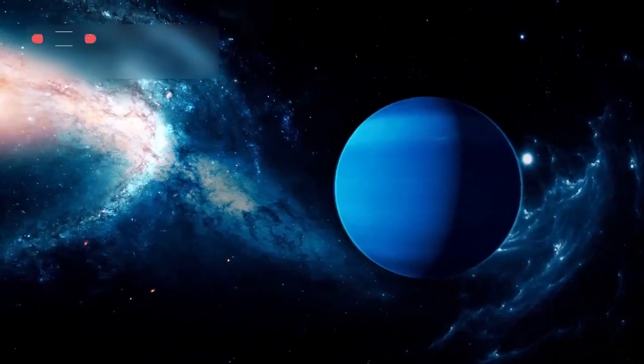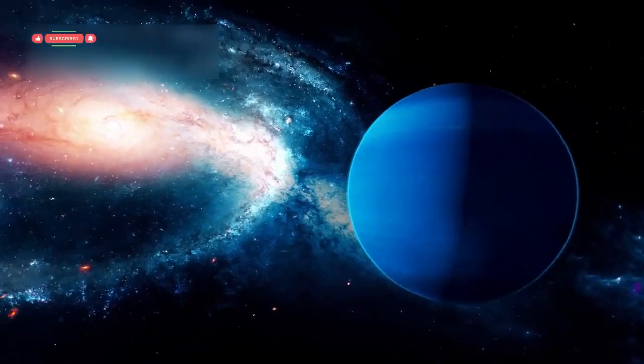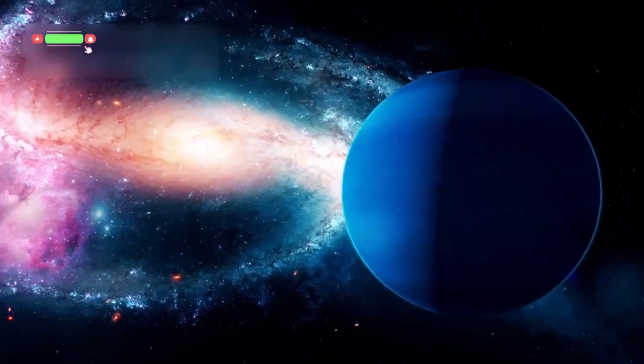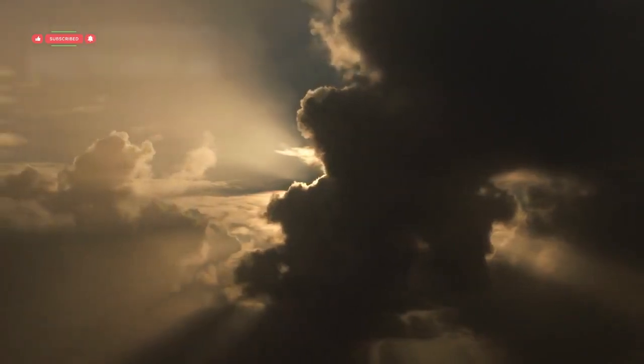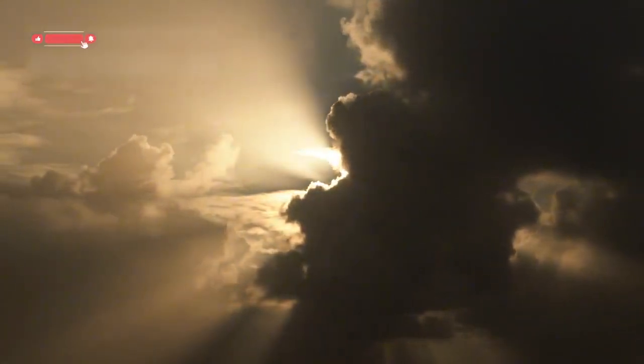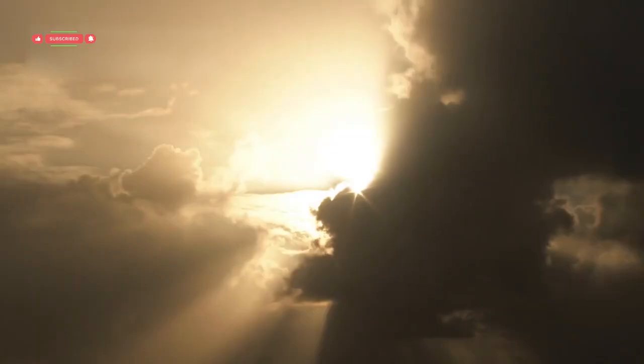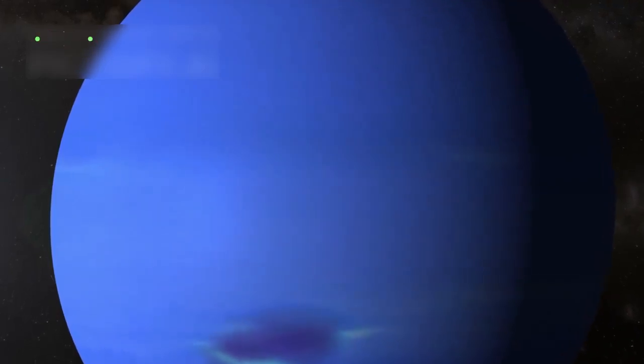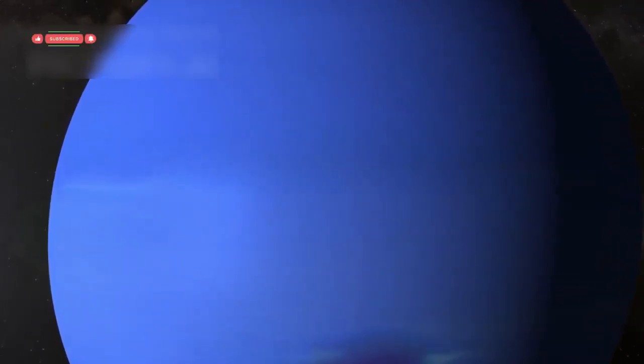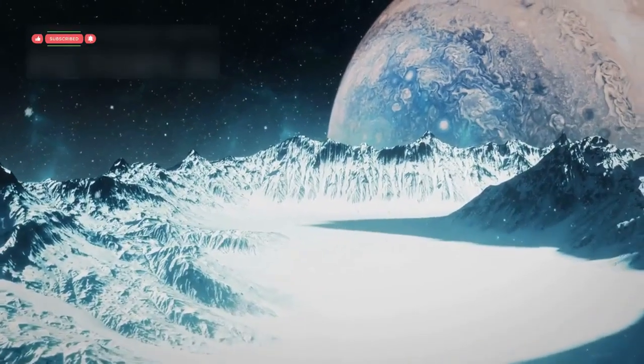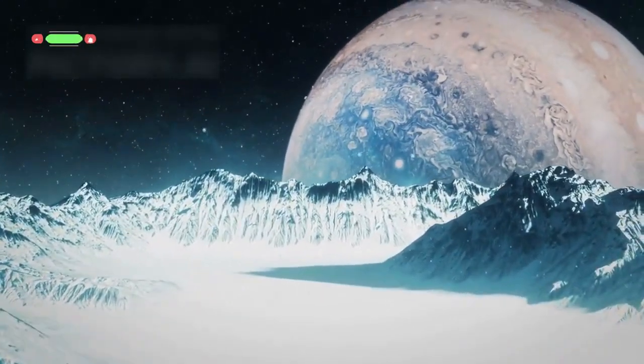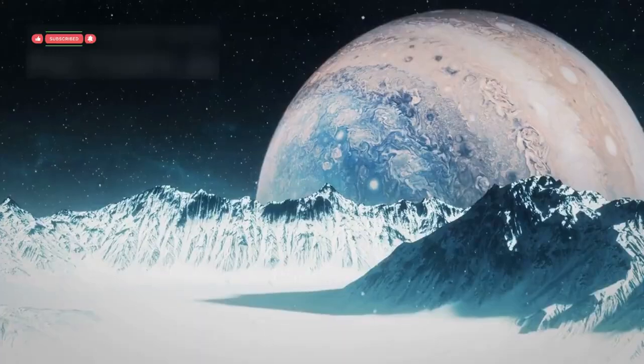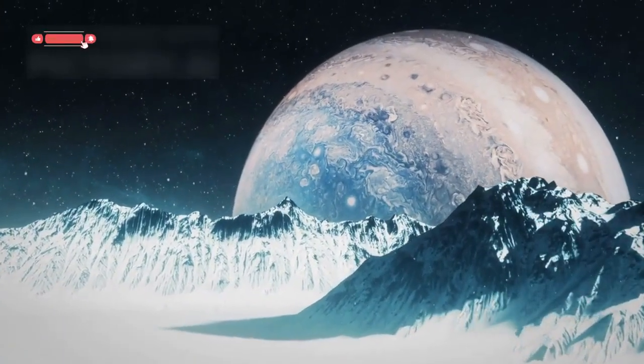In 1989, Voyager 2 reached Neptune and took the first close-up photos of this distant blue planet. The images showed Neptune's deep blue color and revealed the great dark spot, a massive storm as large as Earth's diameter. Voyager 2 also discovered that Neptune has a system of rings and measured winds blowing over 2,000 km per hour, the strongest in the solar system. The probe also observed plumes shooting from the icy surface of Neptune's largest moon, Triton, where cold nitrogen geysers sprayed into space.